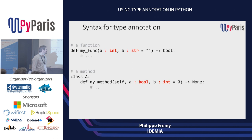Apart from skipping 'self', it's just like a function: colon, type, colon, type, colon, type, arrow, return value.